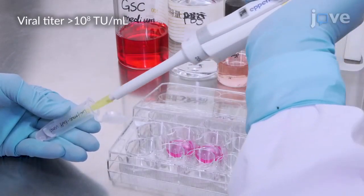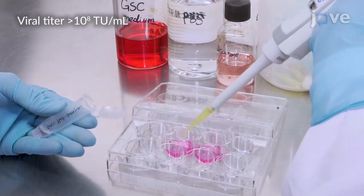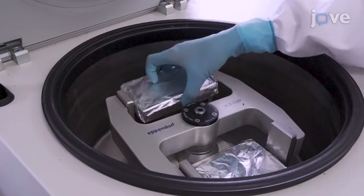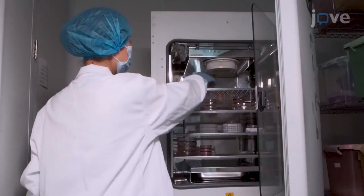On the next day, add 30 µL of luciferase EGFP virus supernatant into each well of the plate. Centrifuge the cells at 1,000 times G for 2 hours at 25 degrees Celsius and incubate them overnight.